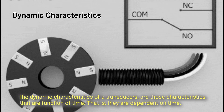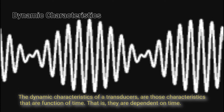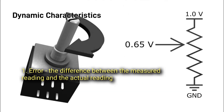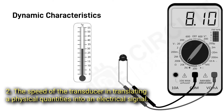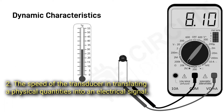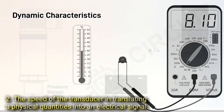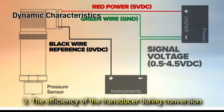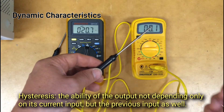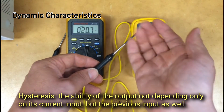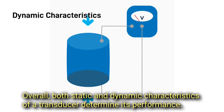Dynamic characteristics are those that are a function of time — they are dependent on time. They include: one, error — the difference between the measured reading and the actual reading; two, the speed of the transducer in translating physical quantities into an electrical signal; three, the efficiency of the transducer during conversion; four, hysteresis — the ability of the output to depend not only on the current input but on the previous input as well.